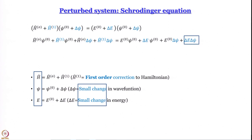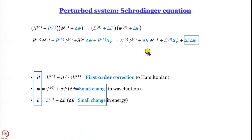Besides δE·δψ, we also neglect Ĥ⁽¹⁾δψ: the perturbation contribution to the Hamiltonian is small and δψ is also small, so their combined contribution is negligible. Out of the eight terms, two are neglected because they are very, very small. That brings us down to six terms.